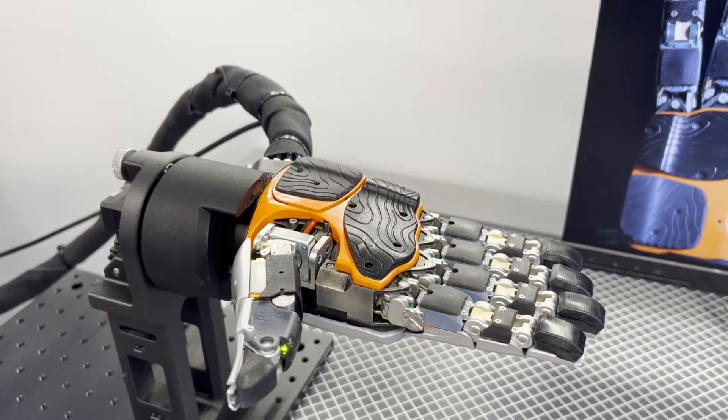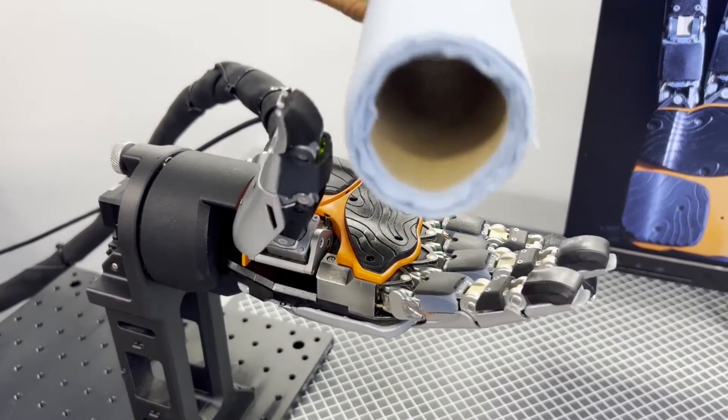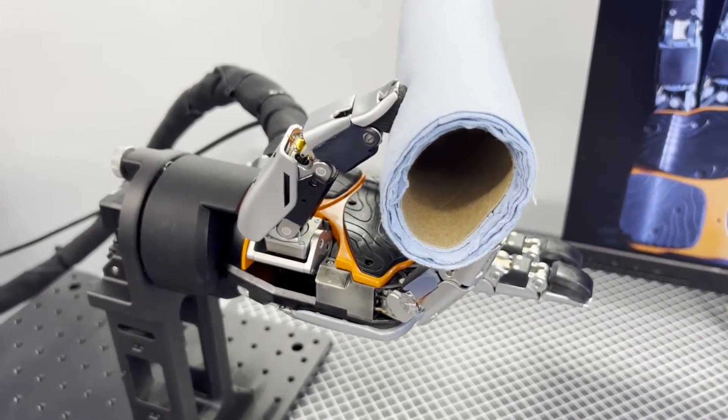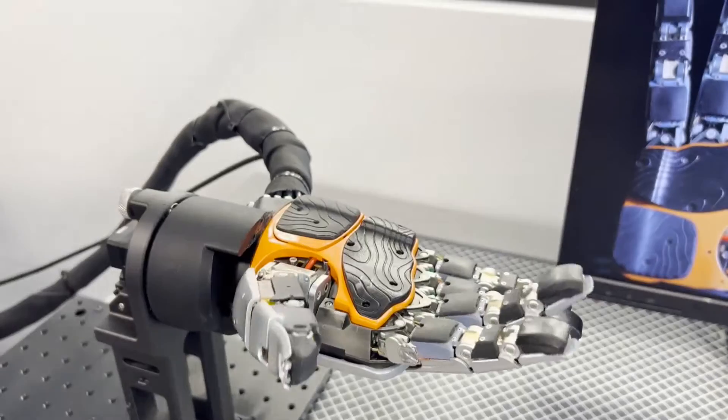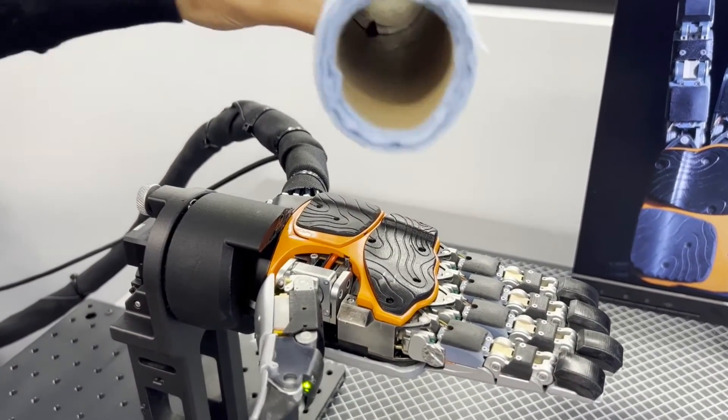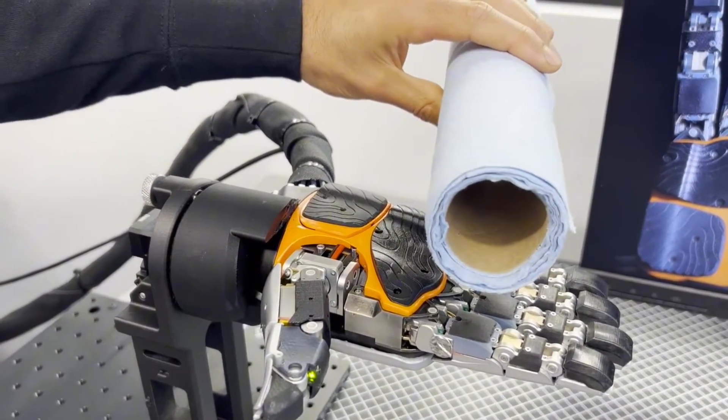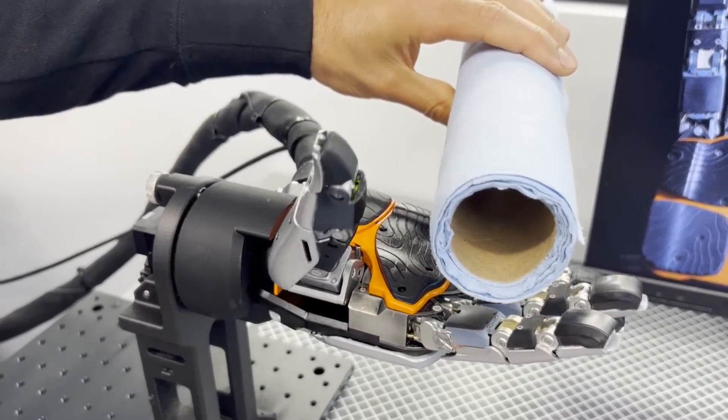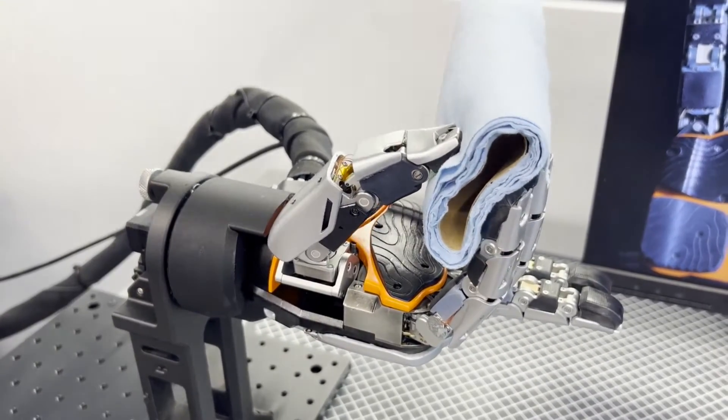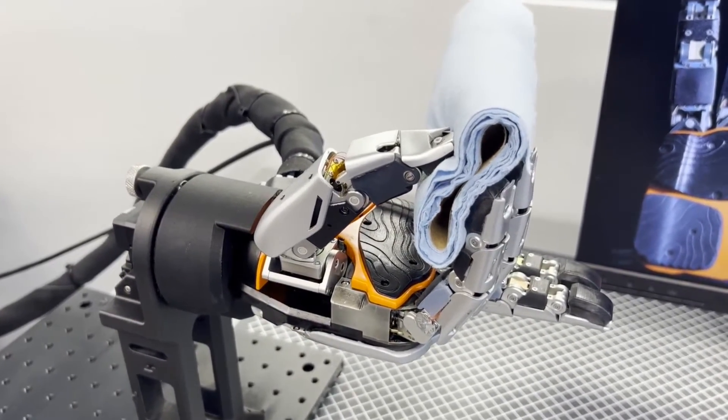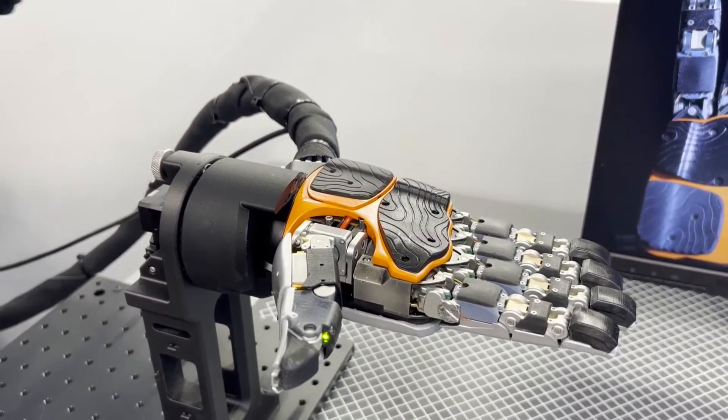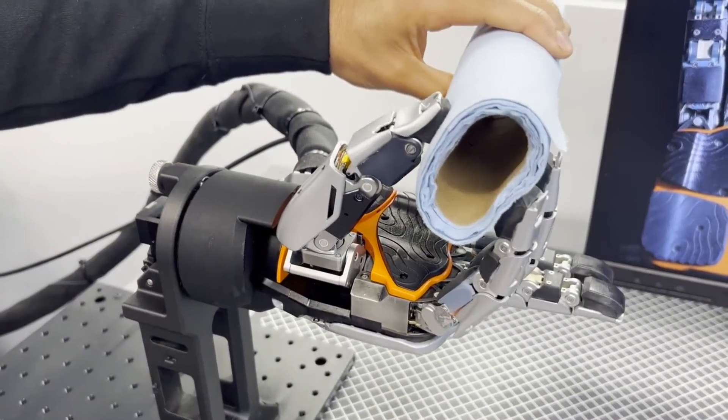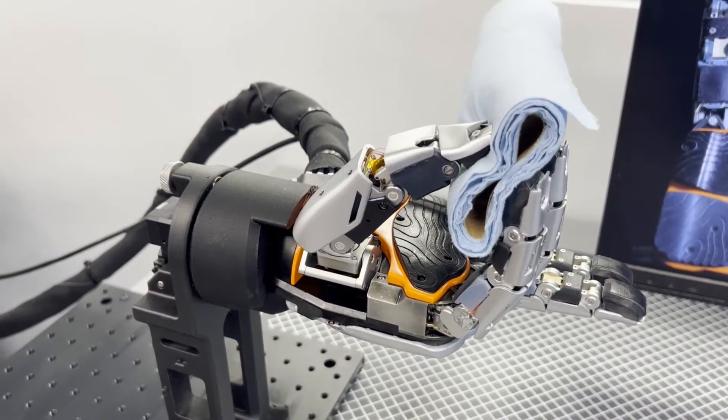One of the most groundbreaking claims about the new Phoenix is its ability to automate new tasks in less than 24 hours. This rapid learning capability is a monumental leap forward in robotics. Just a few years ago, the time it took for robots to learn and automate new tasks was significantly longer, often taking weeks. Now, with the advancements in AI and machine learning, Sanctuary's Phoenix can quickly adapt to new tasks, showcasing a level of flexibility and efficiency that was previously unattainable.